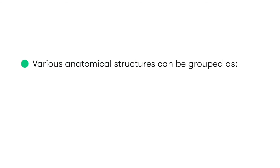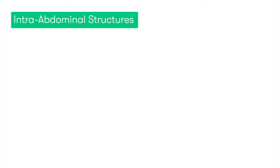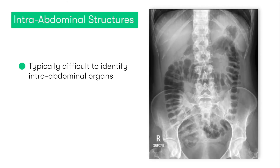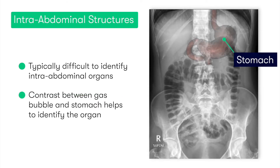We can group the various anatomical structures based on whether they lie inside the abdominal cavity or outside of it. Starting with intra-abdominal organs: in a normal abdo x-ray, it can be quite difficult to visualize intra-abdominal organs. However, as you can see here, the stomach can usually be identified due to the presence of a gas bubble, and the clear distinction between it and the fluid content within the stomach itself.